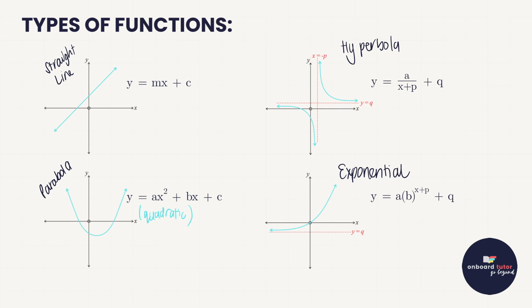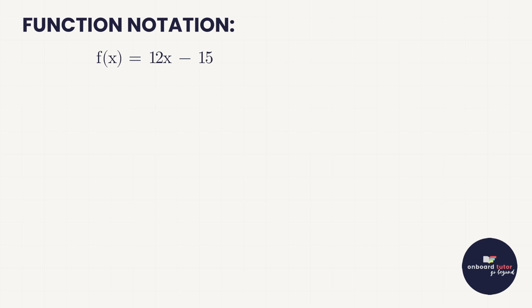We're going to look at each of these functions independently, but before we dive into the straight line — which is what we're looking at today — let's make sure we have a good understanding of function notation. We write it like this: f(x), and we read it as 'f of x.' What that means is we've given our line, parabola, or whatever graph a name — f. F is the most common one because 'function' starts with f, but you can use any letter.